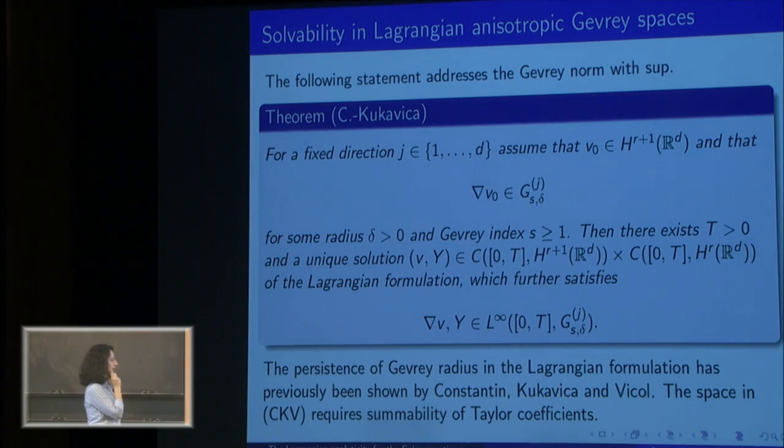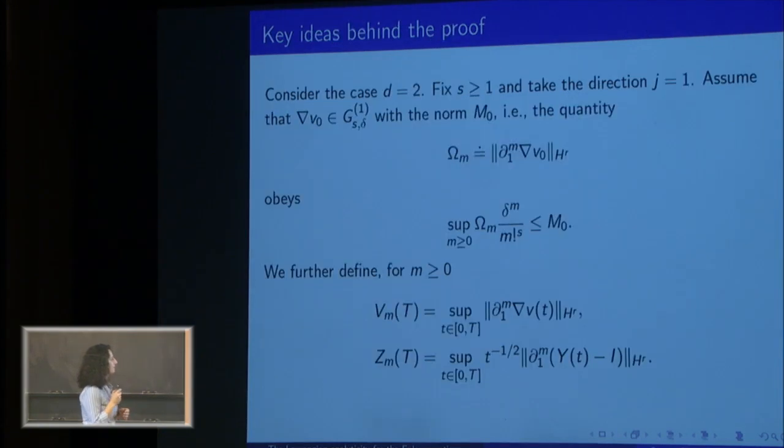This type of persistence result has been studied by Konstantin, Kukavica, and Vicol earlier. There are different ways of setting our analytic classes, and their result required the summability of Taylor coefficients. Another way to look at things is just putting a more natural supremum condition instead of summability, which gives us more flexibility in terms of computations as well.